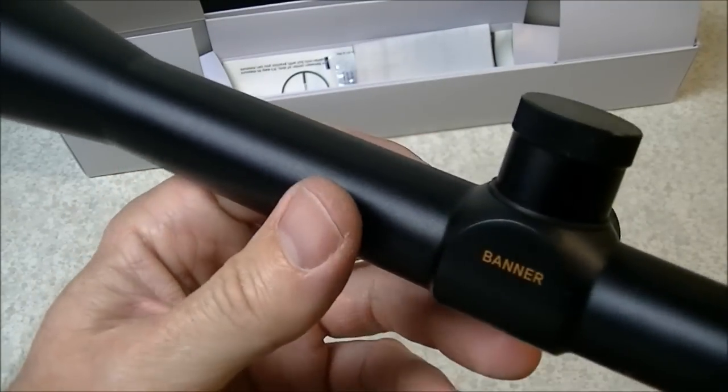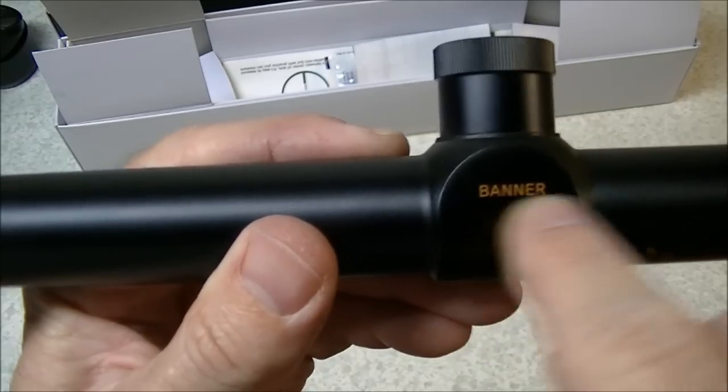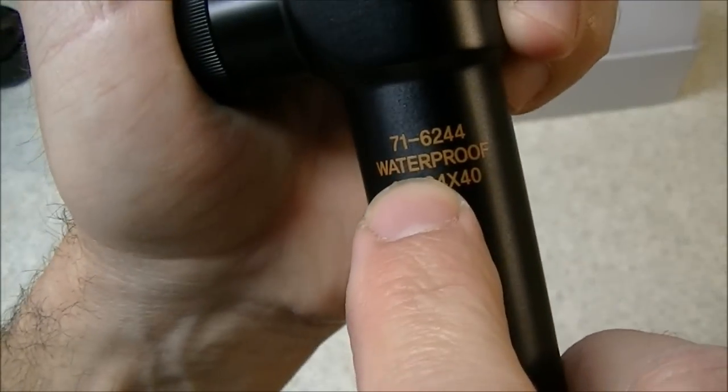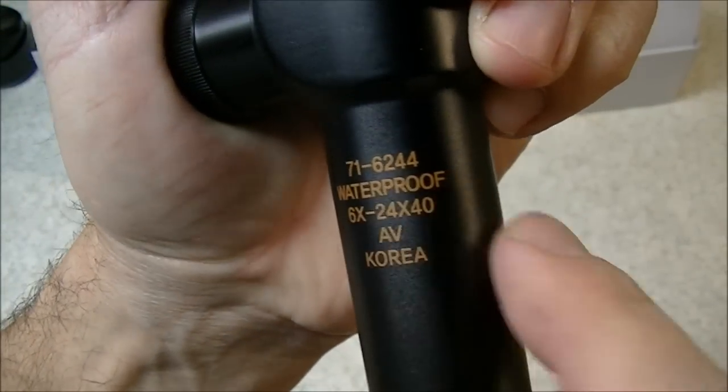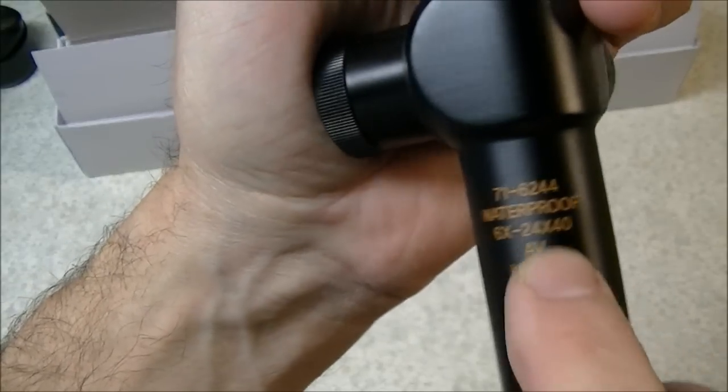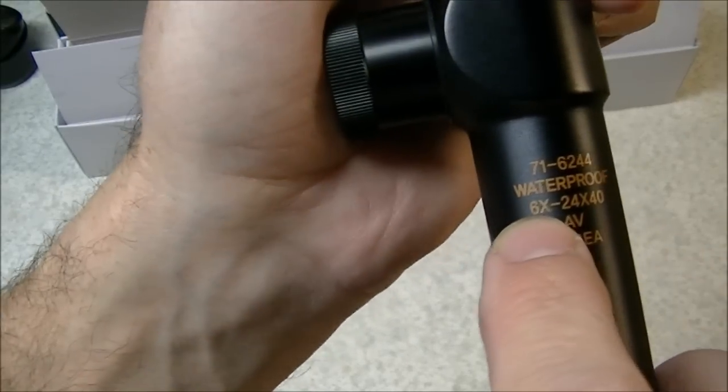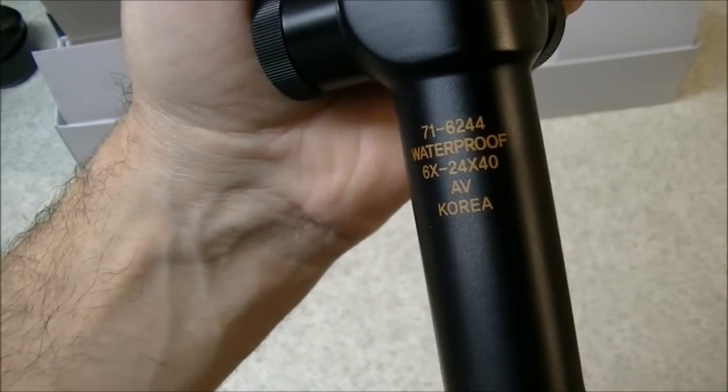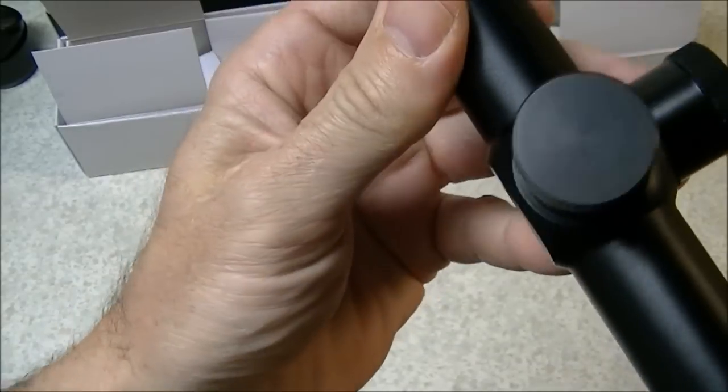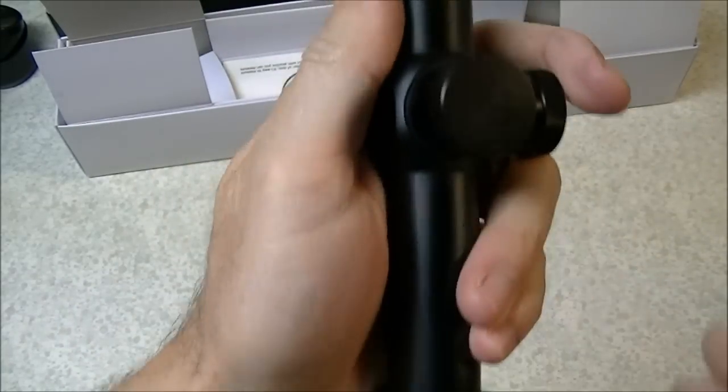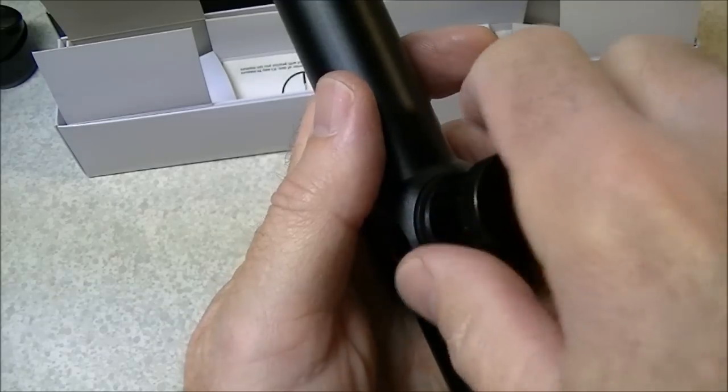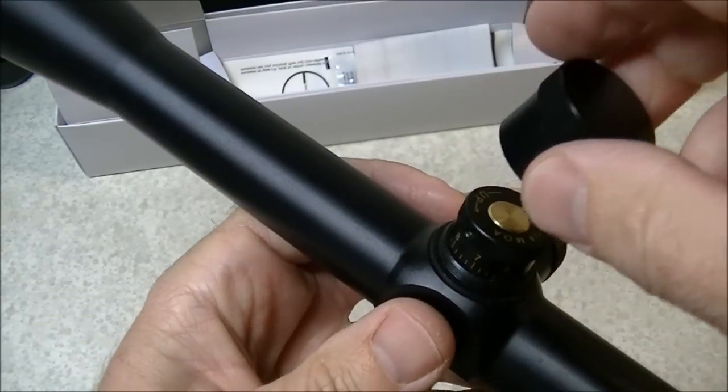Moving back to the turrets here, they've got their banner logo here to designate the model, and we've got the model number printed on the bottom as well, 716244. This is a waterproof scope. The specs once again, 6x24x40, and this is a Korean made optic, not made in China like a lot of the lower priced optics are.